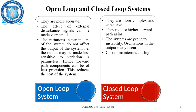Closed loop systems are more complex and expensive, require high forward path gains, and are prone to instability because oscillations may occur in the output. The cost of maintenance is also high in the case of closed loop systems.